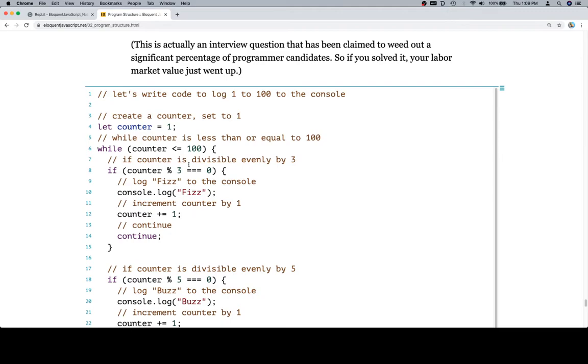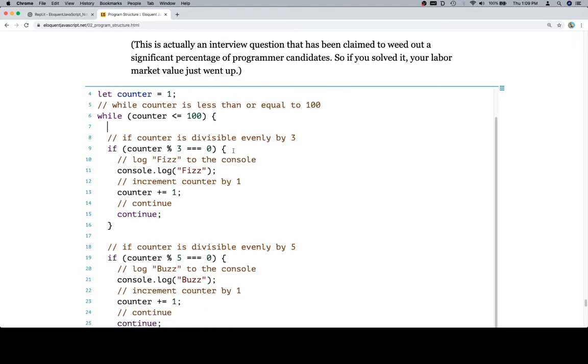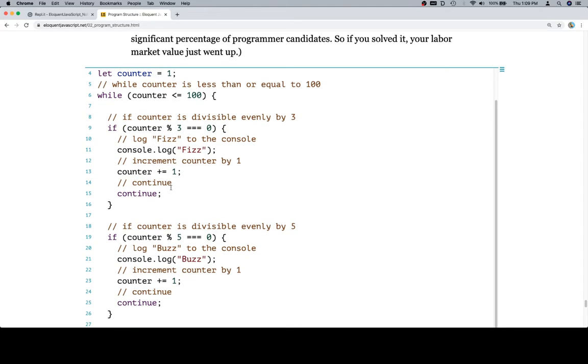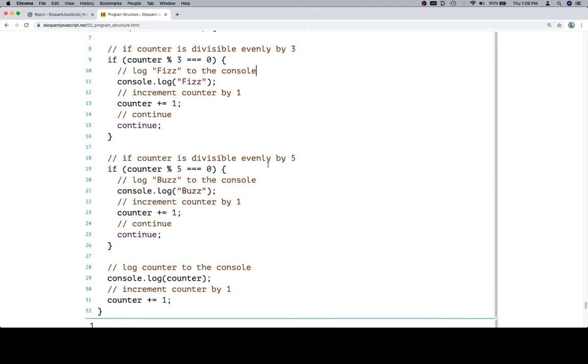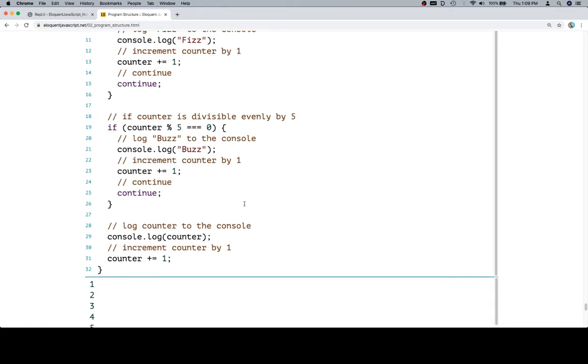And we've got the rest of our code there. So let's walk through our code quickly and make sure that everything that we kind of think should be happening is happening. First thing, create a counter. Good. Counter less than or equal to 100. If counter is divisible evenly by 3, that's this. Log Fizz to the console. Increment the counter by 1 and then continue to the next iteration. Counter divisible evenly by 5. Same story. Console.log.buzz. Increment the counter and continue. Neither one of those is the case, it's going to get down to this section of the code where we just log the counter to the console and then increment the counter by 1. So let's go ahead and run this.